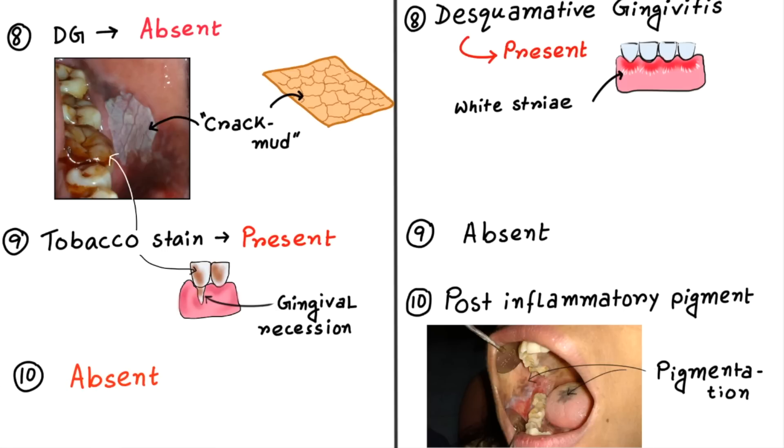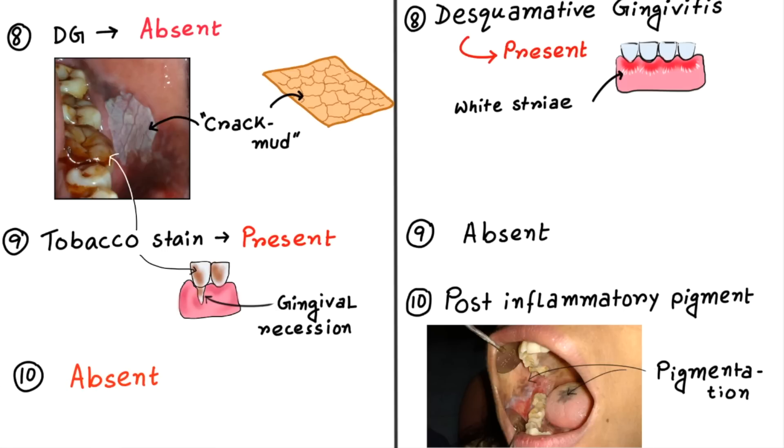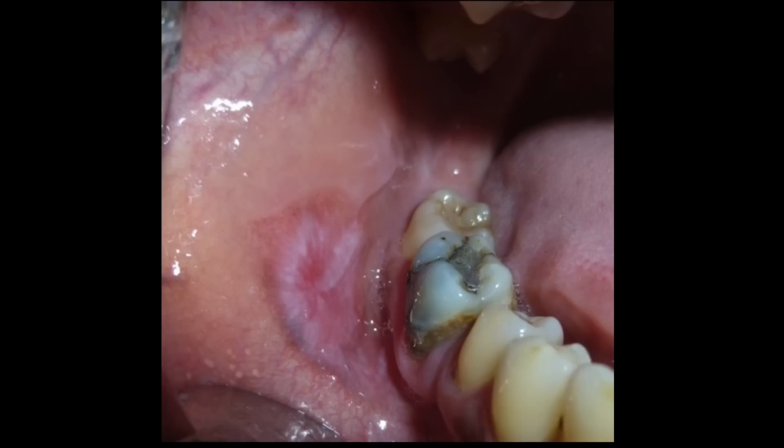So with these 10 points, you can differentiate Leukoplakia and Lichen Planus clinically. It is necessary for the management point of view. Now I have a slide for you — pause the video, observe the picture carefully, and let me know your diagnosis in the comment section. That's all guys, if you have enjoyed this video please like, comment, share, and don't forget to subscribe. Thank you.